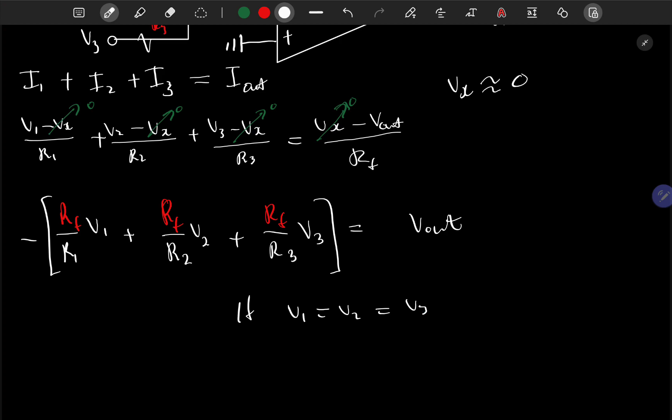Let me do it. If v1 equals v2 and equals v3, then we would have taken that out: Rf v1, and then what remains here, 1 over r1 plus 1 over r2 plus 1 over r3, equals negative vout.